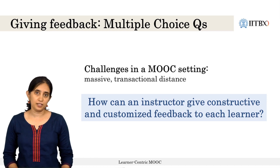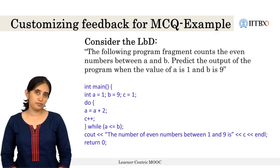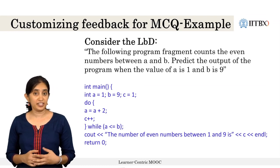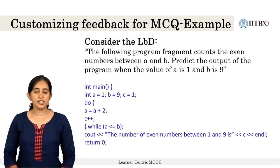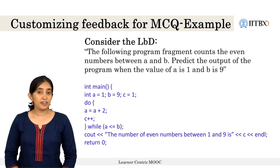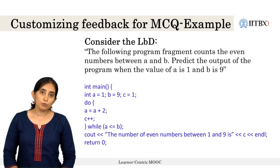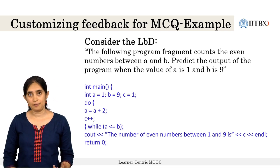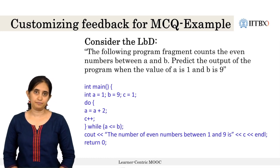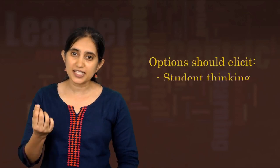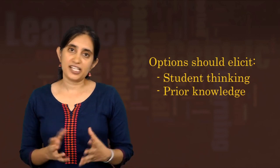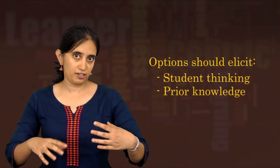Let us discuss this with an example of a multiple choice question from a programming course on the topic of iterations. Suppose there is an LBD which reads as follows: the following program fragment counts even numbers between A and B — predict the output of the program when the value of A is 1 and the value of B is 9. The program fragment is given; you can take a look at this. To create the options for this question, an instructor can think of what difficulty students might face or what common errors they may make. The options can be created to elicit students' thinking and their prior knowledge, something experienced instructors will be familiar with from classroom experience.